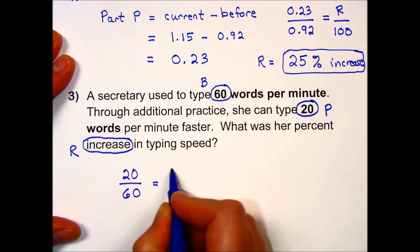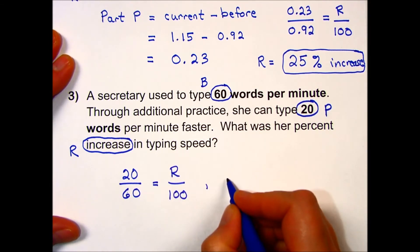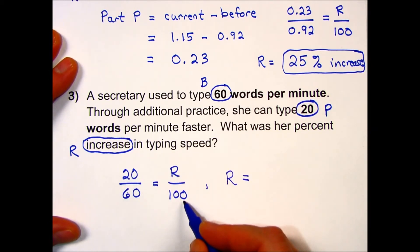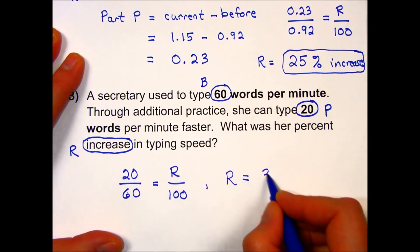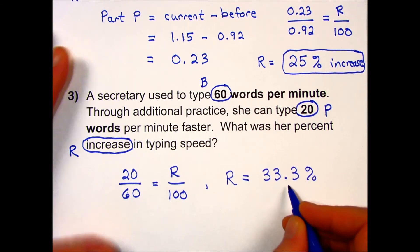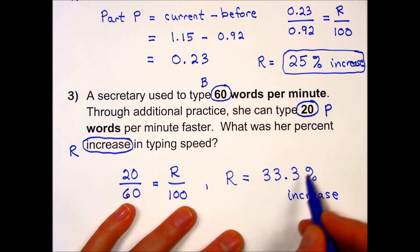Putting these into my formula, I have part over base is rate over 100. My rate is 20 times 100 divided by 60. My calculator gave me 33.33 and a third percent for the increase, and I've rounded to the nearest tenth of a percent.